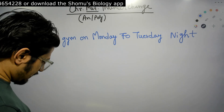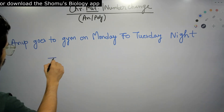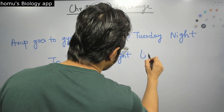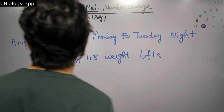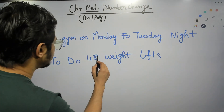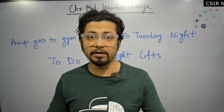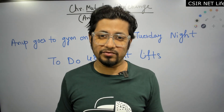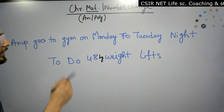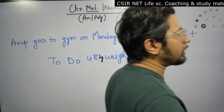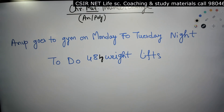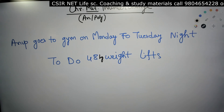And the next part of it: 'to do 48 weight lifts.' That's it. Anup goes to gym on Monday to Tuesday night to do 48 kg weight lifts. It's not a matter of joke — it's a heavy drill, and only an experienced gym enthusiast can do that. Picturize it, because until you picturize it, you cannot get the exact essence of it.